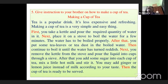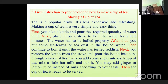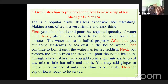Look at the sequence connectors used — first, next, after that, then, next, then. These words help us to develop the sequence, that is why they are highlighted in red. First, you take a kettle and pour the required quantity of water. Next, place it on the stove to boil. After that, add tea leaves or tea dust. Then continue to boil until the water has turned reddish. Next, remove the kettle and pour through a sieve. After that, add sugar and mix hot milk. You may add ginger or lemon juice according to your taste. Then the cup of tea is ready to be served.